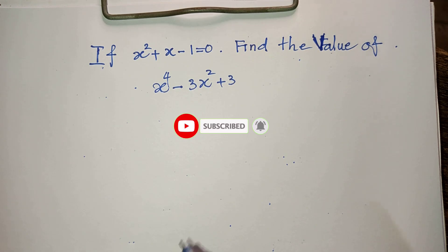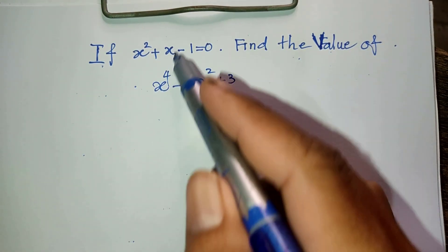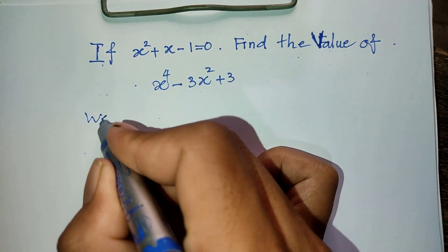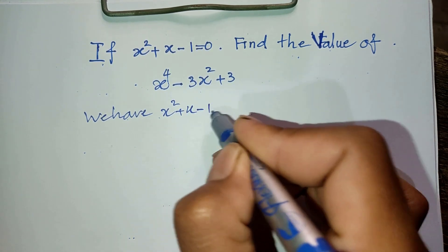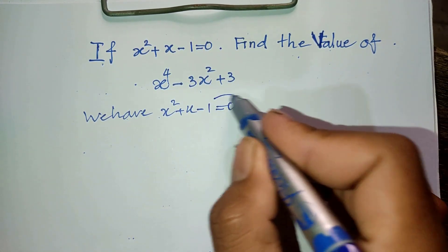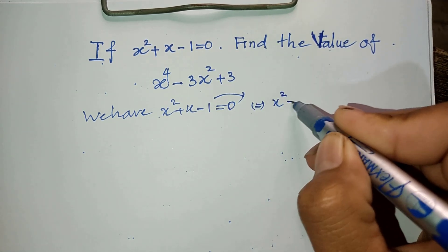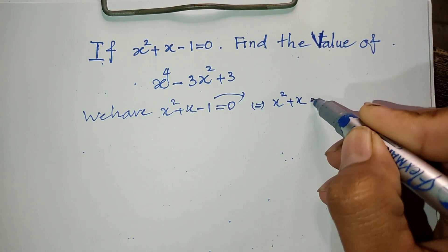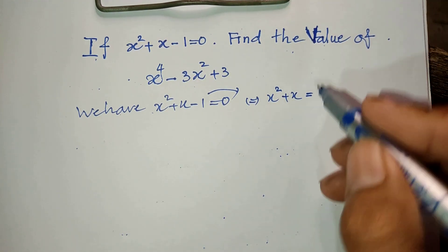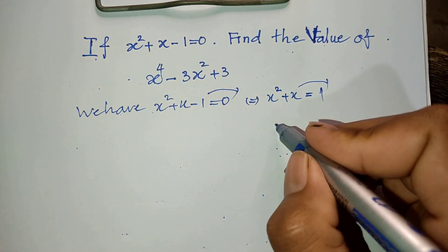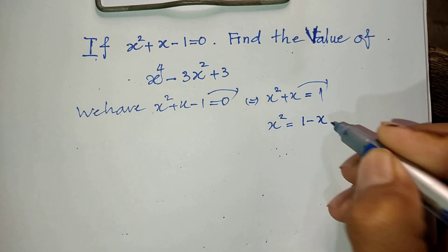Now we go to the solution. We have x squared plus x minus 1 equals 0, so I take 1 to the right side. I get x squared plus x equals 1. And I take x to the right side, I get x squared equals 1 minus x.